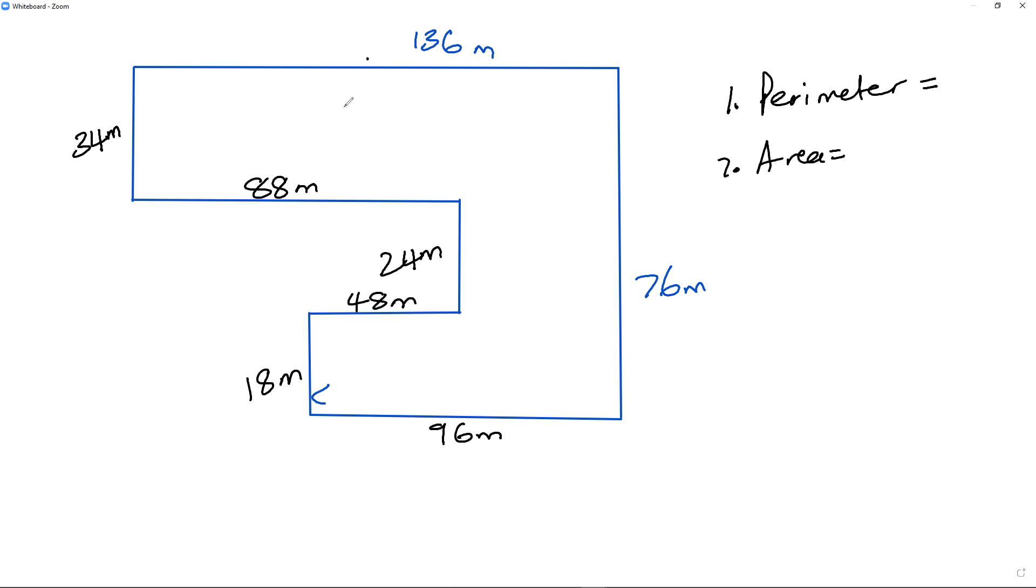And my perimeter is going to be given by simply adding all of those values together. Alright, so I'm going to grab a calculator. I got 34 plus 136 plus 88 plus 24 plus 48 plus 18 plus 96 plus 76, and I get 520. I'm just going to double check this. Alright, so I've got 34, this is question one, 34 plus 136 plus 88 plus 76 plus 24 plus 48 plus 18 plus 96.